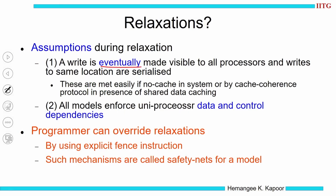A write will become eventually visible to all the processors and all writes to the same location are serialized. If I have no cache, the memory which is a single point of synchronization manages that. If I have a cache, the cache coherence protocol easily guarantees this requirement. The other condition is that all models are going to enforce data and control dependencies, which is definitely required — you cannot oversee these because that is the correctness semantics of any program.